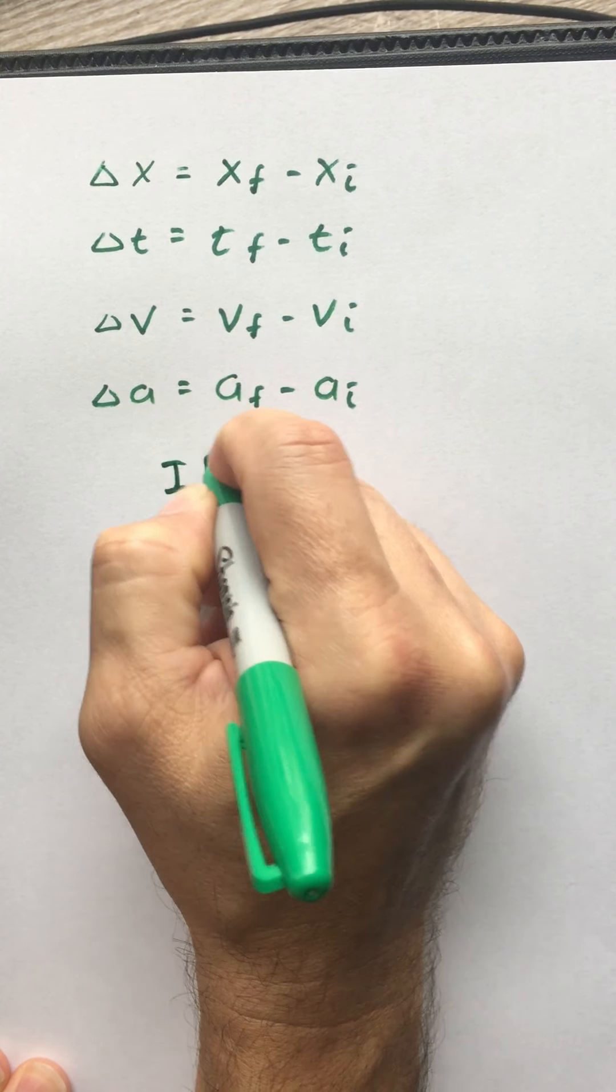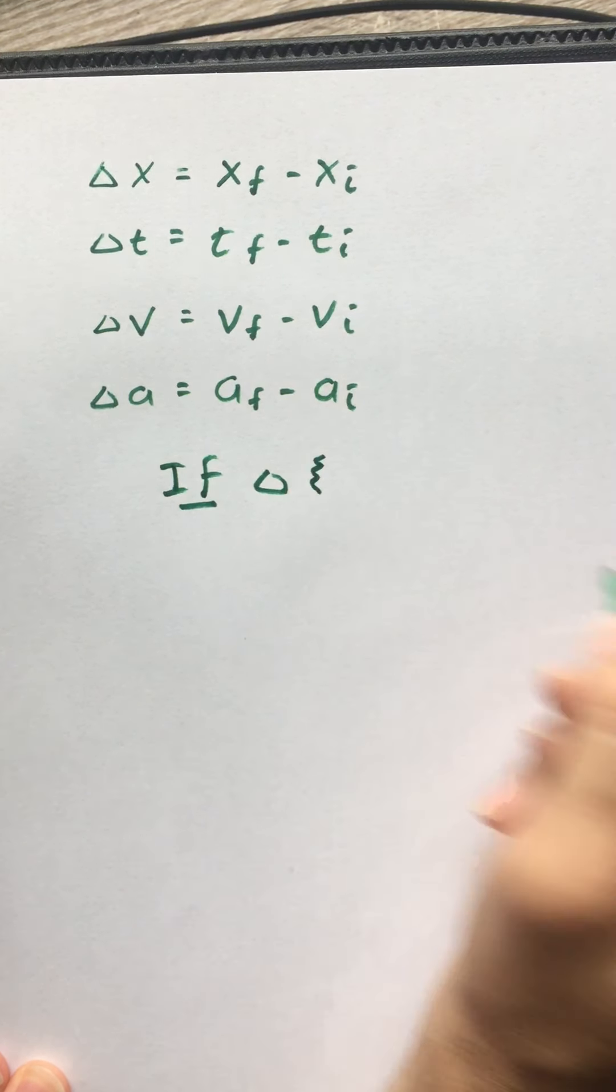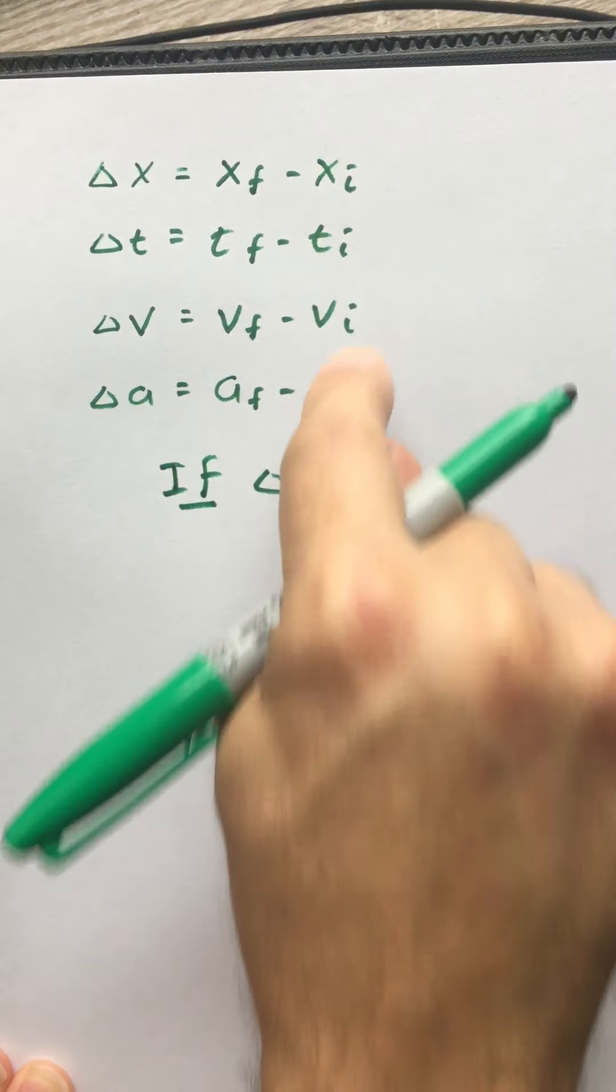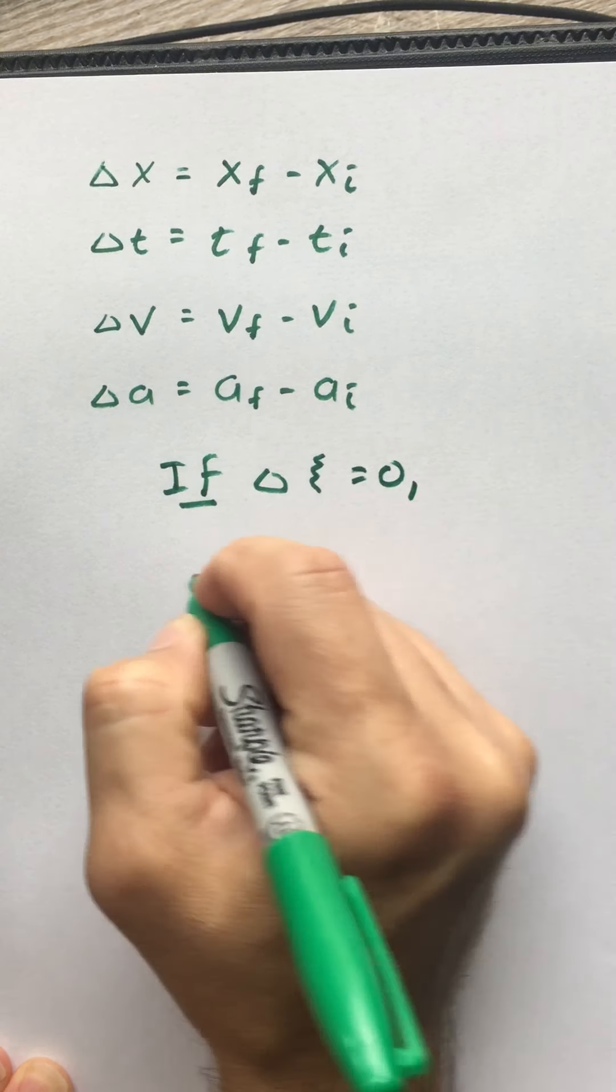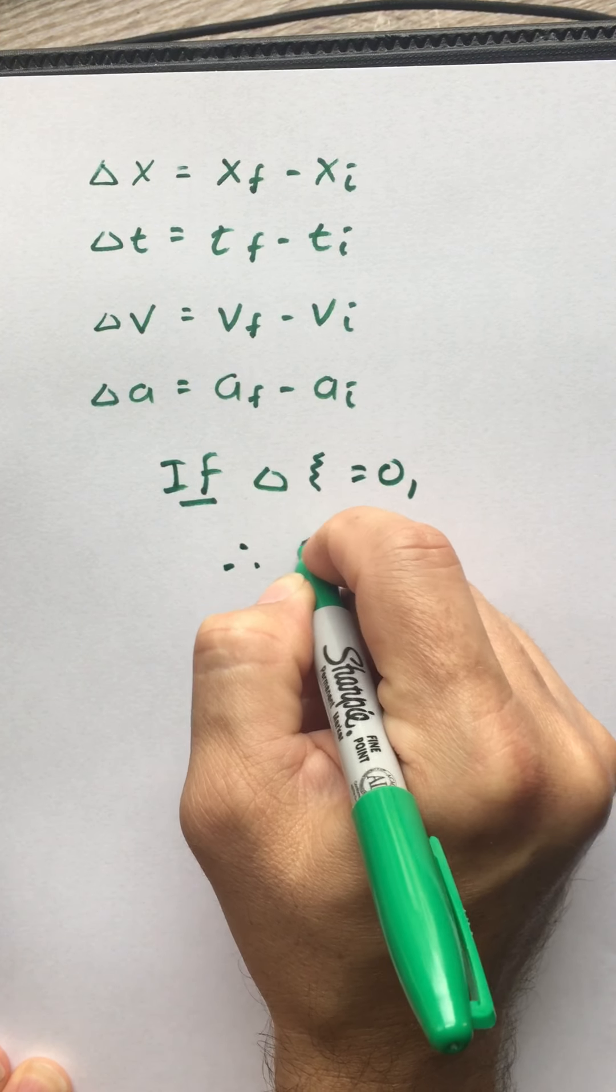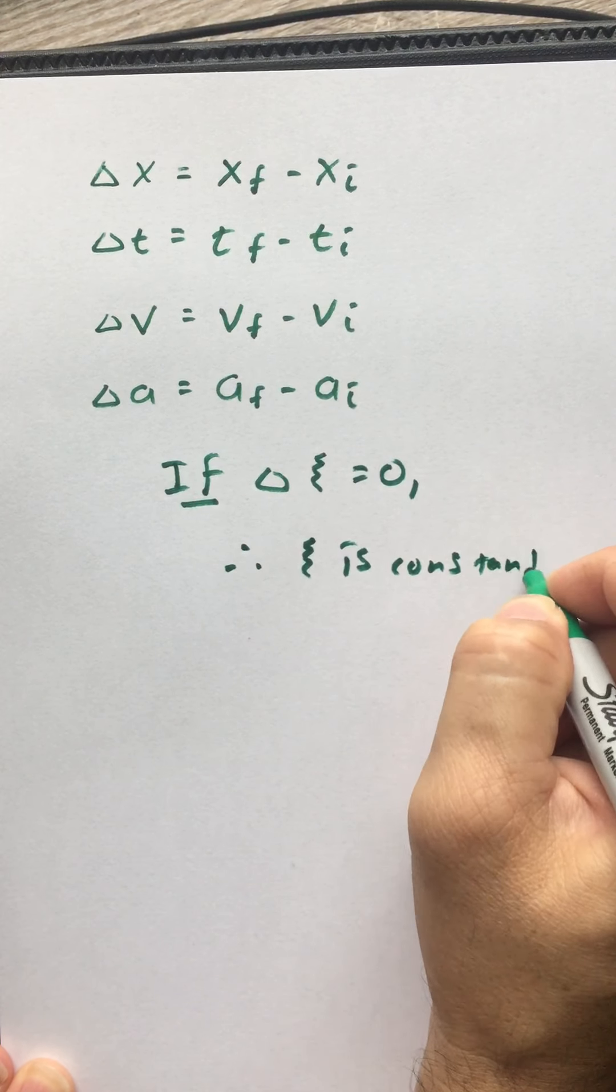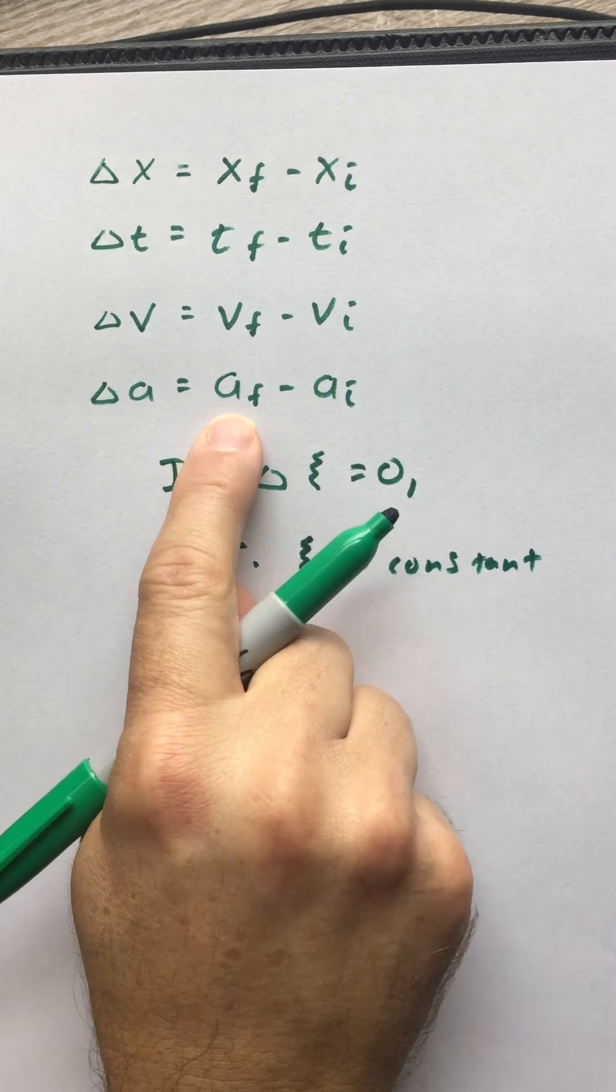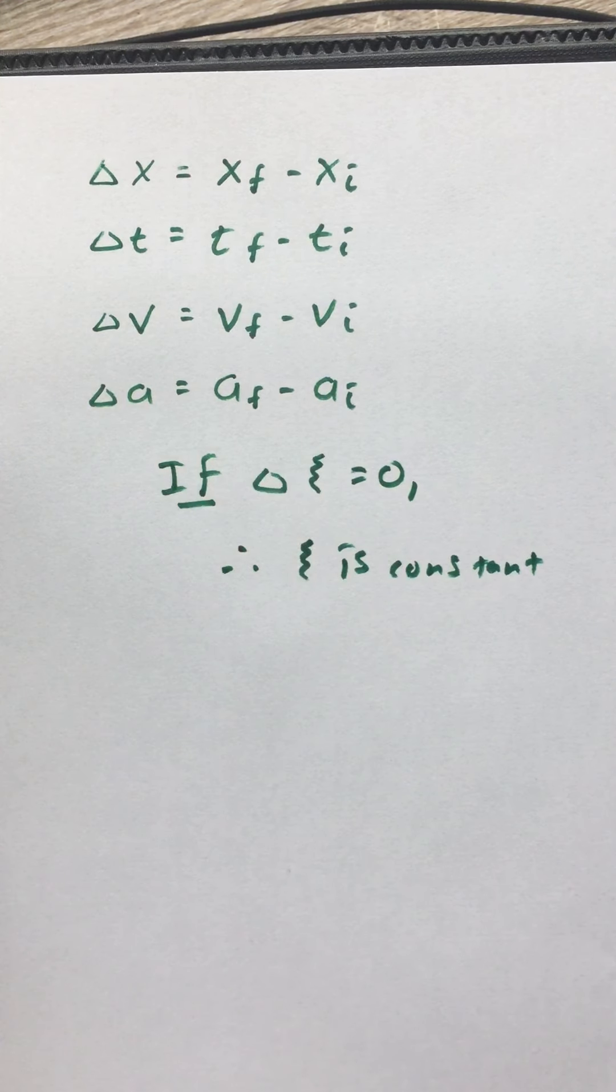And so I'll say this as a general rule. If delta of whatever, whatever you want to put where the squiggly line is, x, t, v, a, whatever, if that equals zero, this means that whatever that is, is constant. If delta A is equal to zero, that means that the final acceleration and the initial acceleration are the same. There's no change in acceleration, so A is constant.